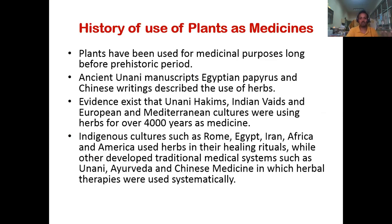Looking at the history of medicinal plants, their use as medicines dates back to the prehistoric period. Plants have been used for medicinal purposes since the beginning of human civilization. Ancient Unani manuscripts, Egyptian papyri and Chinese writings describe the uses of herbs as medicines. Cultures such as Rome, Egypt, Iran, Africa and America used herbs for healing rituals, while others developed traditional medical systems such as Unani, Ayurveda and Chinese medicine, in which herbal therapies were used systematically.